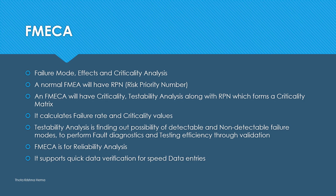In general, any FMEA will have RPN, that is Risk Priority Number. Along with Risk Priority Number, this FMEA will have criticality in place, which forms a matrix called the criticality matrix.